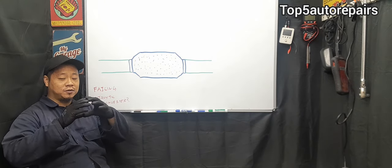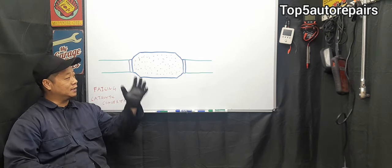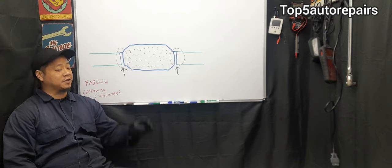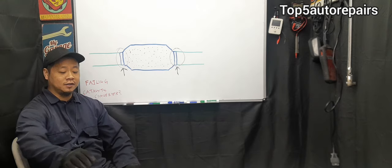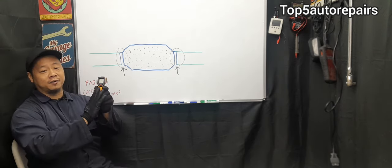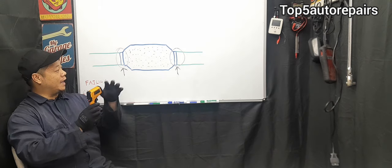Basically, what are you looking for is the honeycomb structure. If the honeycomb structure looks like it came apart, then it's definitely time to change that catalytic converter. If you suspect that your catalytic converter is clogged, buy yourself an infrared thermometer and this is the quickest way to check if it's clogged or not.